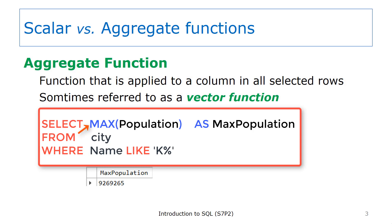On this slide, you see the MAX function. That function takes one argument, which is the name of the column that you want the function to work with. In this example, we are finding the maximum, or largest, population of the cities that begin with the letter K. An aggregate function works in conjunction with the WHERE clause, if there is one. The WHERE clause determines if a row is included in the result set. In this case, the only rows that will be considered are those where the city name begins with K. Once the result set membership is determined, the MAX function is applied to the specified column over the result set.